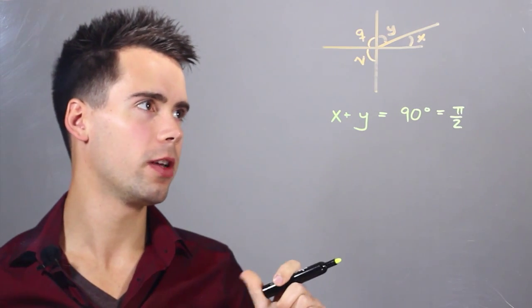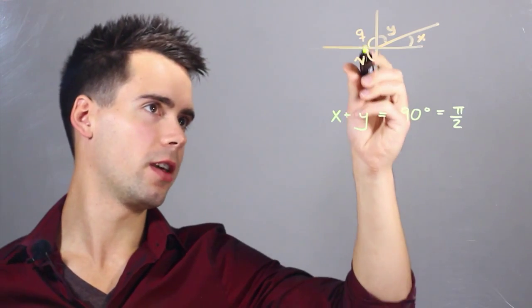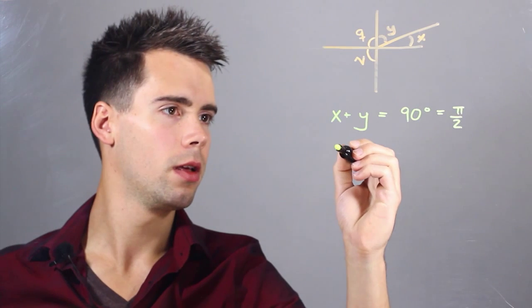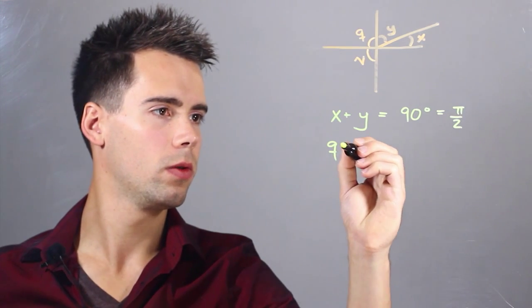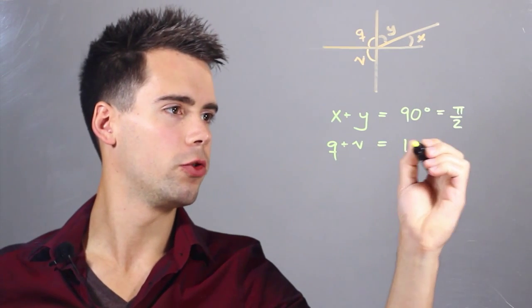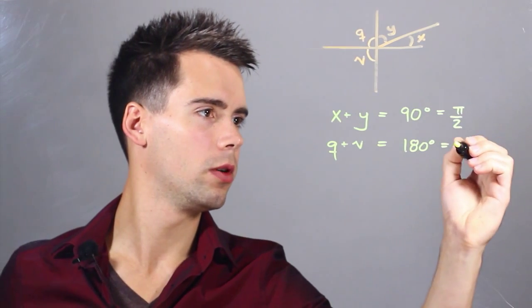Now if we want to examine supplementary angles, these are ones that add to 180 degrees. So we can find that q, which is 90, and v, which is 90, q plus v equal 180 degrees, which is equal to just pi.